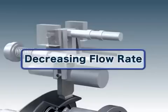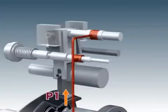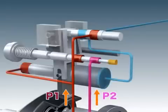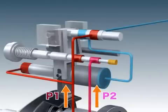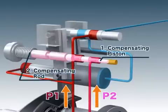Next, we will explain how the regulator decreases the flow rate. When the delivery pressure of the pump P1, or of a companion pump P2 increases, the pressure moves the compensating piston, pushing it against the compensating rod.